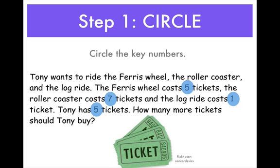So our first step is to circle — let's circle the key numbers. We know that the Ferris wheel costs 5 tickets, let's circle that. The roller coaster costs 7 tickets, circle that one. And the log ride costs 1 ticket. So far we have 5, 7, and 1. Next, Tony has 5 tickets, so we circle 5 tickets. All together we have circled 5, 7, 1, and 5.